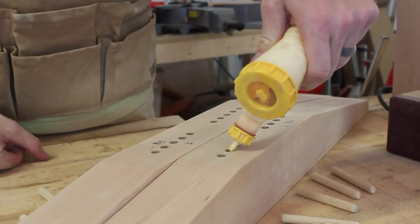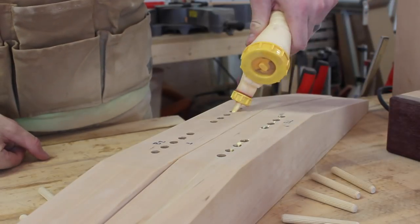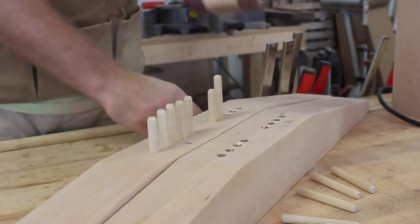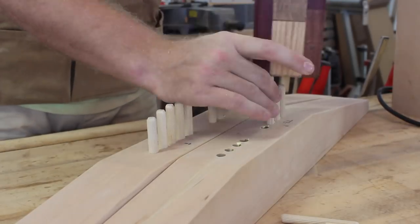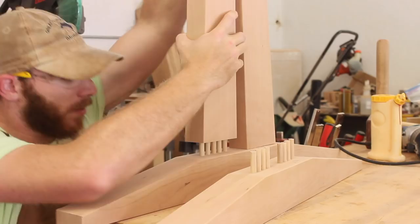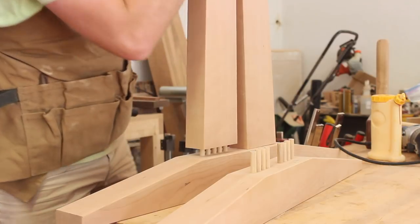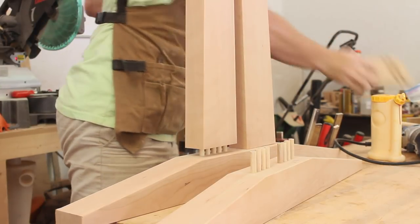I got all of these pieces sanded up to 220 and added a 1⅛ inch round over to all the edges, then I can get ready for the glue up. I'm using 3 inch dowels here, which add a pretty good amount of strength. When you do your test fits, just make sure to use 2 or 3 of the dowels, because if you try to use all of them, you probably won't get them apart.